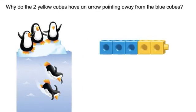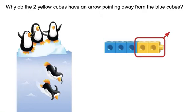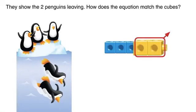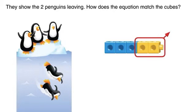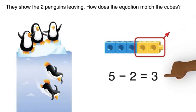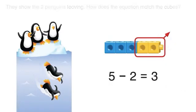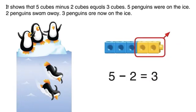Why do the two yellow cubes have an arrow pointing away from the blue cubes? They show the two penguins leaving. How does the equation match the cubes? It shows five cubes minus two cubes equals three cubes.